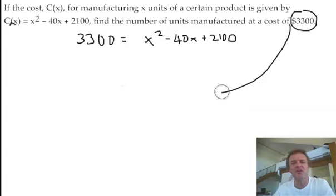In other words, that's the cost 3300, so that's where the C is. And it still equals X squared minus 40X plus 2100. Now remember, we need to put it equal to zero. So I'm going to take away 3300 from both sides. Get rid of that and that will put it equal to zero.